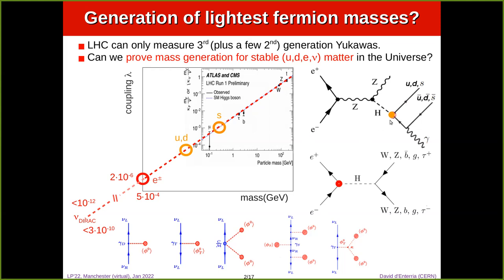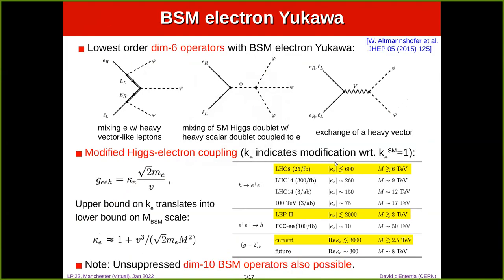For first-generation quarks — u, d, s — light quarks, there are proposals to look at exclusive final states where you could set some limits. For the electron Yukawa, this coupling is of order 10^-6. The only way to really probe this coupling is by looking at the S-channel resonant production of the Higgs boson and then looking for a final state that is consistent with the production of the Higgs.